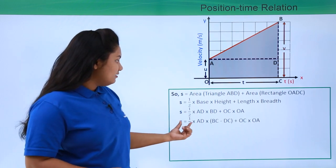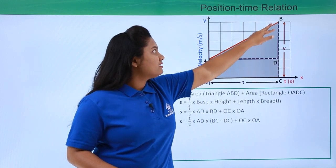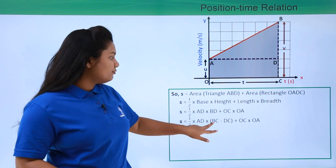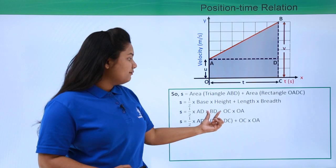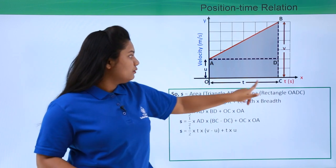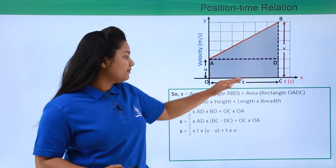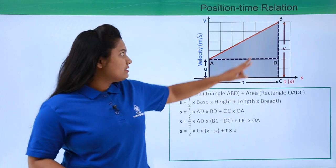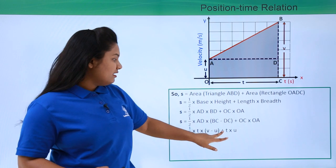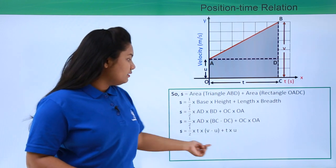Now BD is given by BC minus DC. When we subtract DC from BC we get BD, so we substitute BC minus DC in place of BD. AD equals OC since it is the opposite side of the rectangle, so AD equals t. BC equals v, DC equals the initial velocity u, and OC equals t and OA equals u, so we have substituted all the values into the equation.